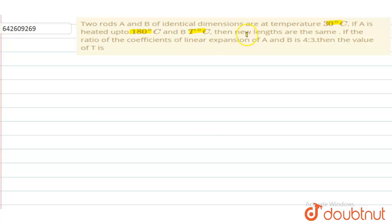T degree celsius, then new lengths are the same. If the ratio of the coefficient of linear expansion of A to B is 4 to 3, then the value of T. You have to find the value of T. We have given that